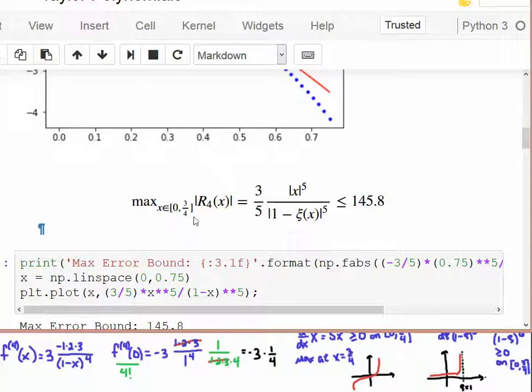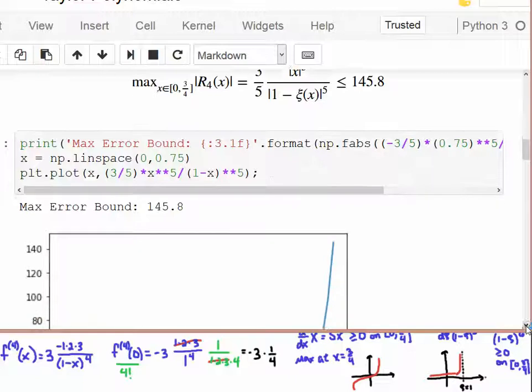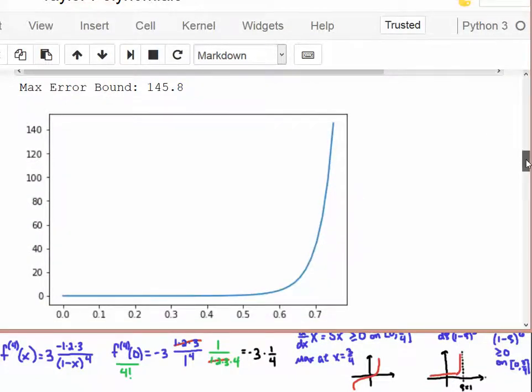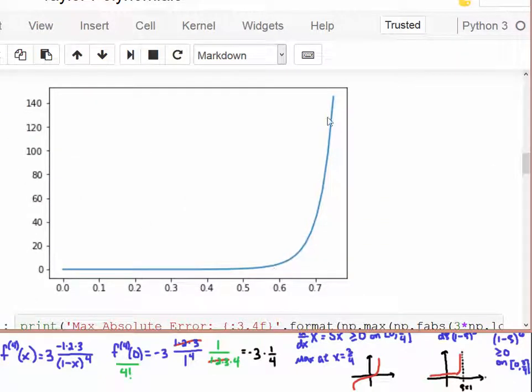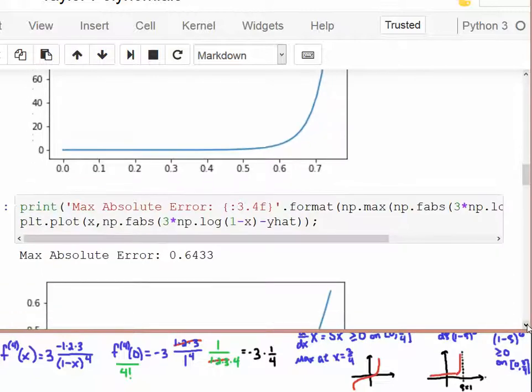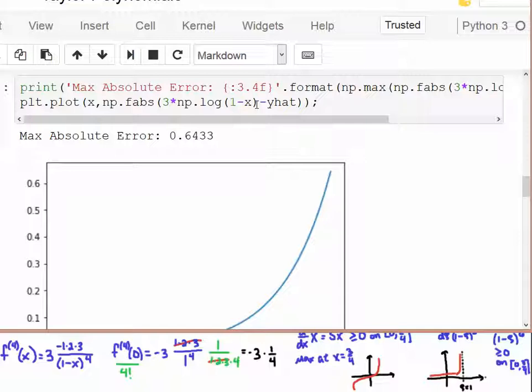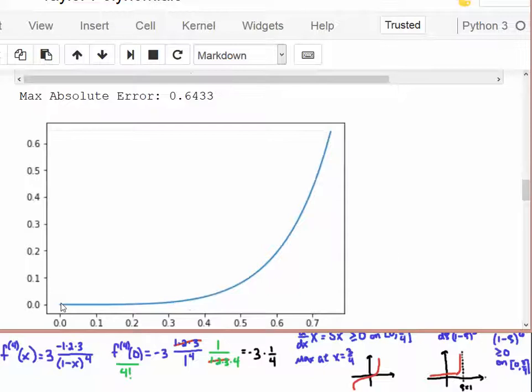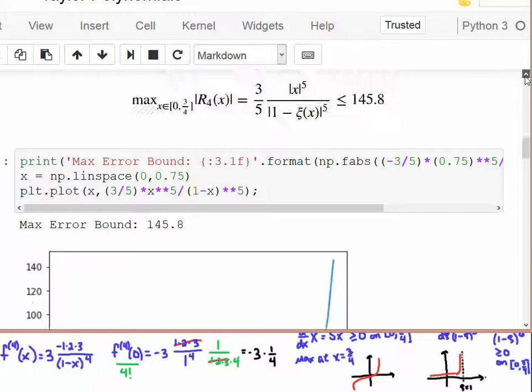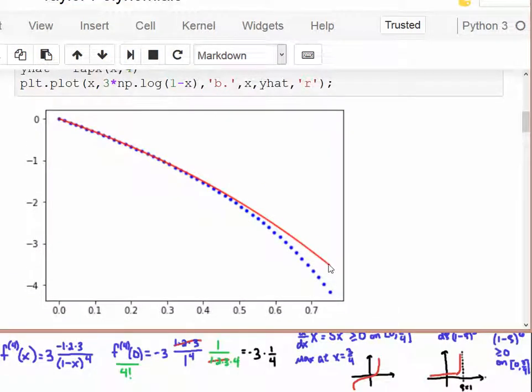This is the result that we got from our analysis. If you take a look at that function, this remainder function here, and we plot it, we get something like this, shooting up all the way there to something over 140. But if we look at the exact amount over this interval, the exact values of natural log of 1 minus x minus our estimate, which I call y hat here, and we plot that over this interval, you can see that the error is increasing. The absolute error is increasing as you go from 0 to 0.75, but it does not go anywhere near 145.8. In fact, the gap seems to be about 0.6433. We go back up here, and we see that the gap between this value on the approximation and the exact is about 0.6433.